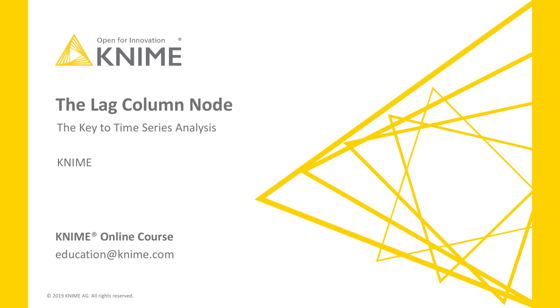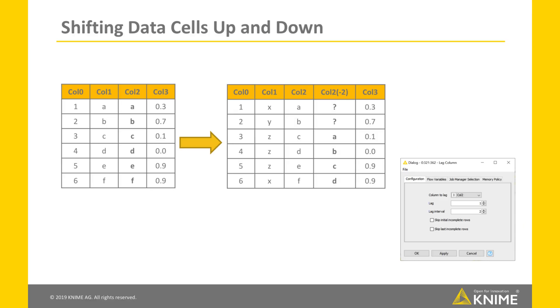Very simply, the Lag Column node takes a column, copies it, and shifts it down a number N of data cells. For example, here it takes Column Col2, copies it, and shifts it down two steps. The parameter N here has been set to 2.